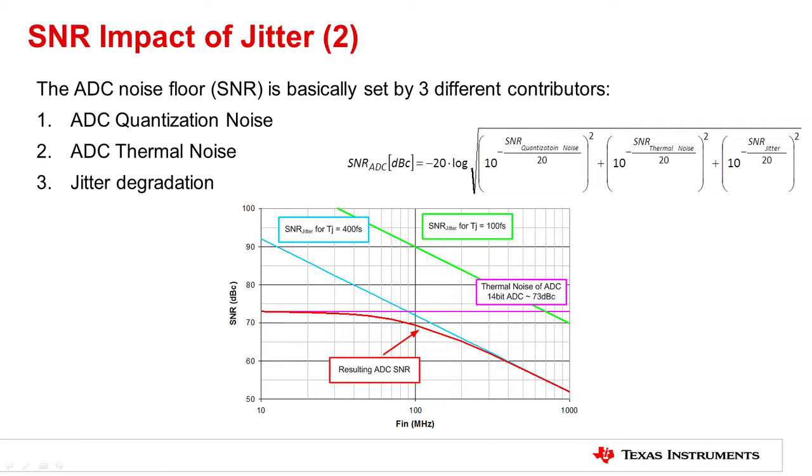The noise floor of the ADC is determined by three different contributors. First is the ADC quantization noise. Typically, the output resolution of the ADC is chosen such that the quantization noise does not degrade the ADC SNR significantly. In high-speed ADCs, the effective number of bits, or ENOB, is typically quite a bit lower than the actual resolution of the ADC. Second is the ADC thermal noise. The thermal noise is the inherent noise floor of the ADC. Third is the jitter degradation. This is the noise contribution due to clock edge timing uncertainty.